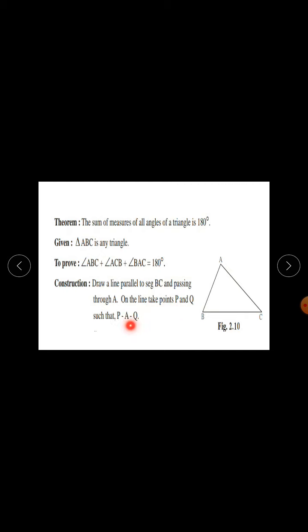In this theorem there is a construction. Draw a line parallel to seg BC and passing through point A. On the line, take points P and Q such that P-A-Q. This is your construction.